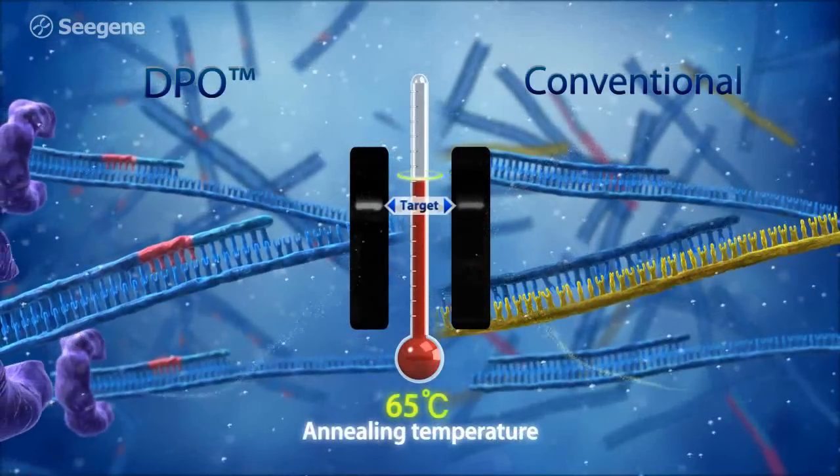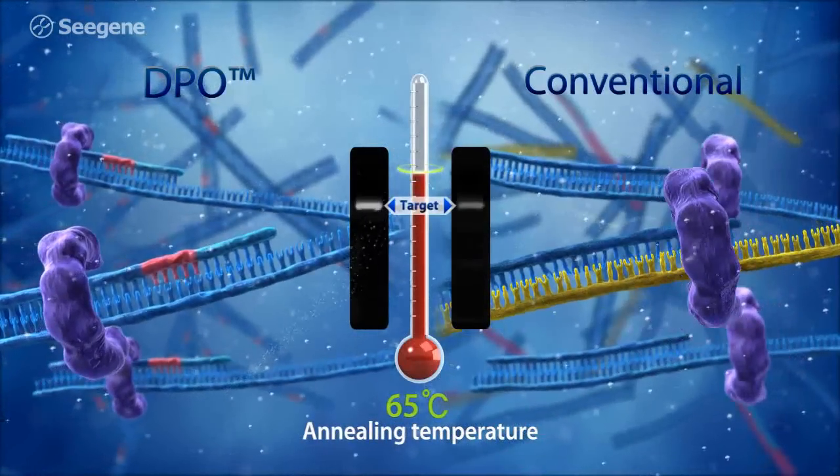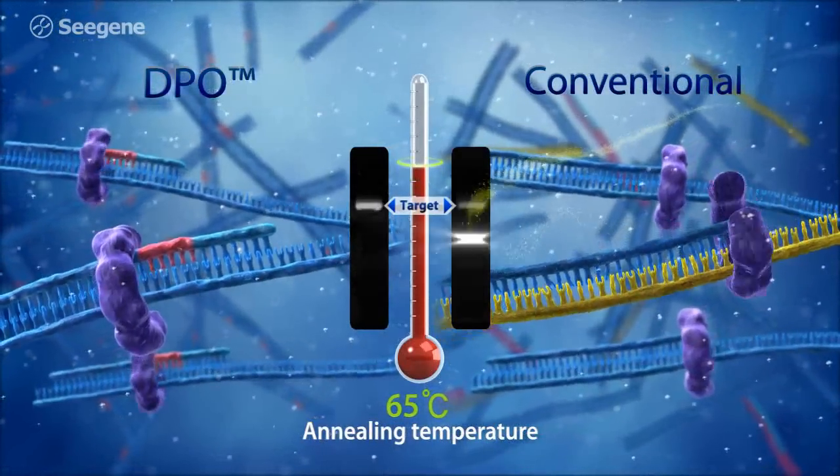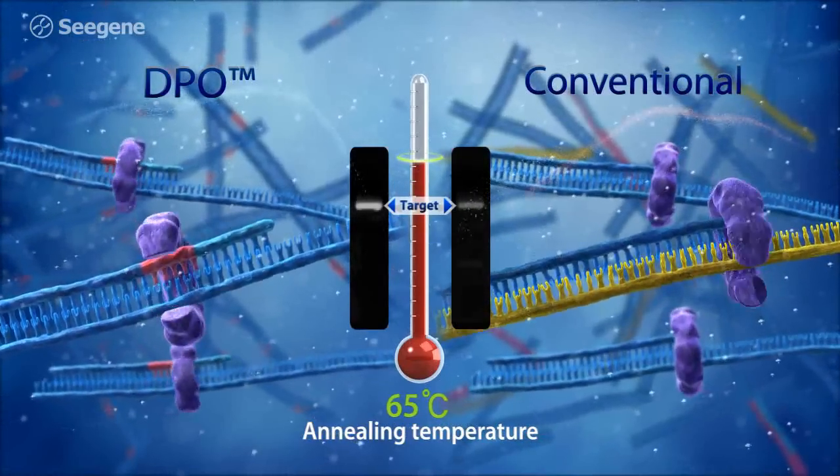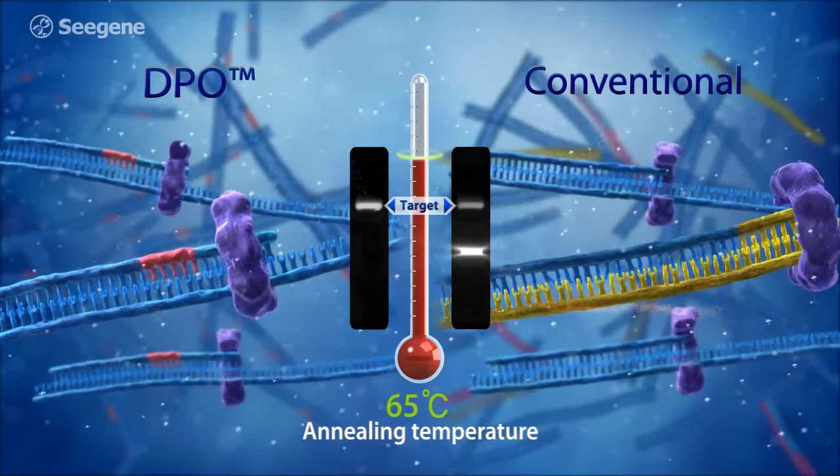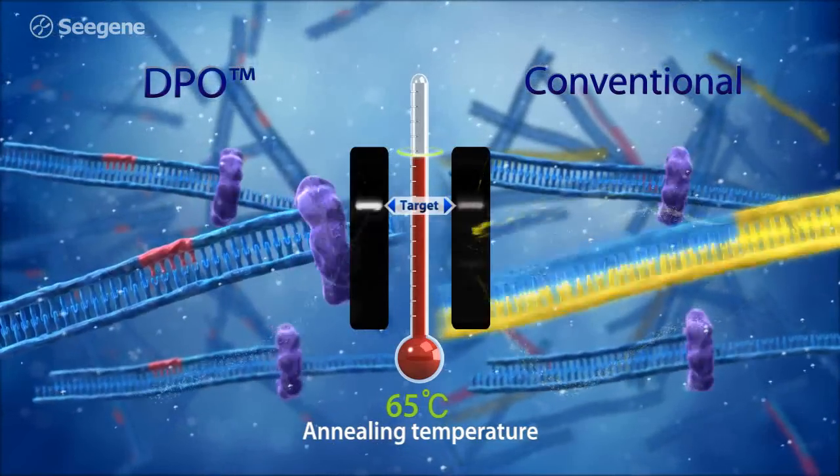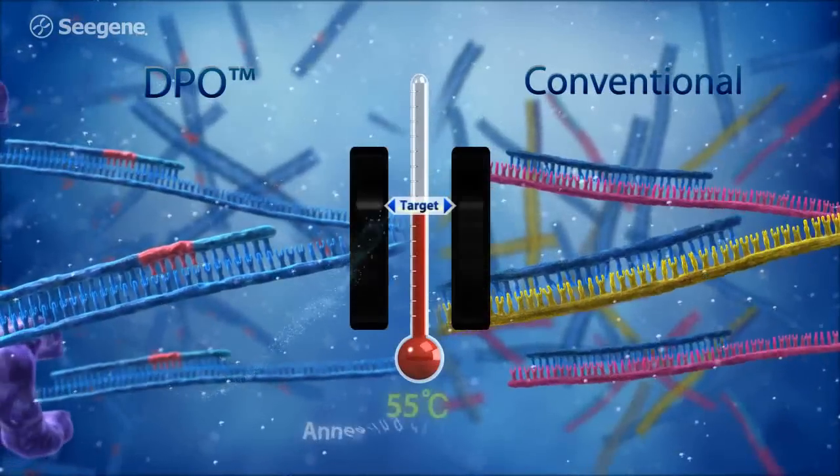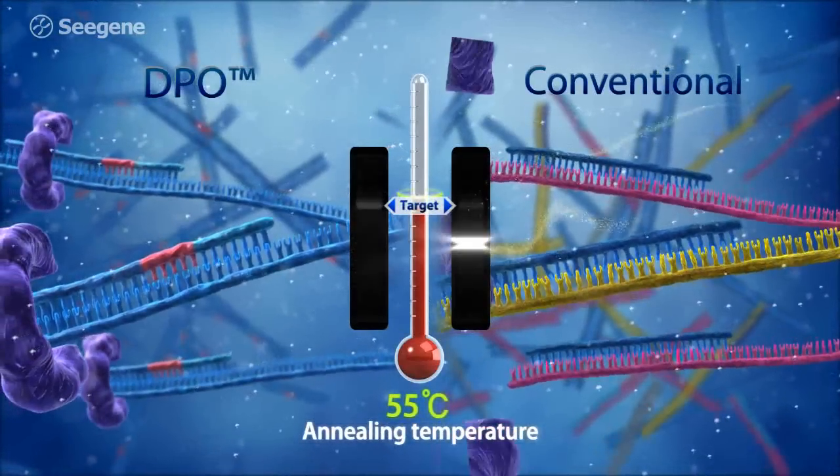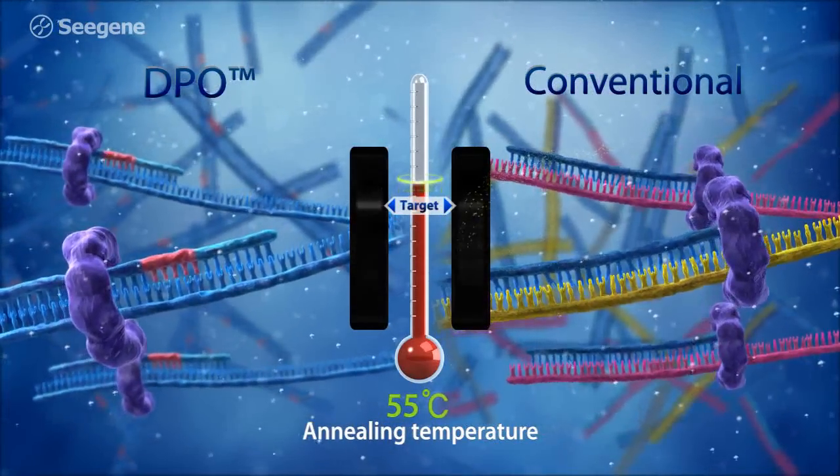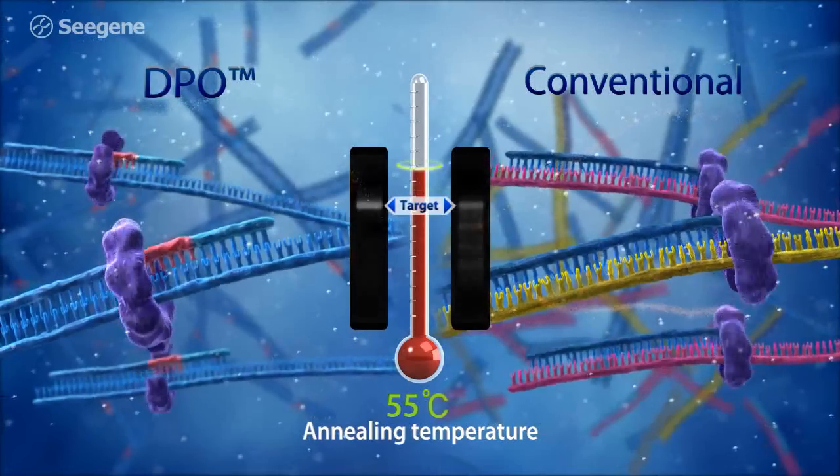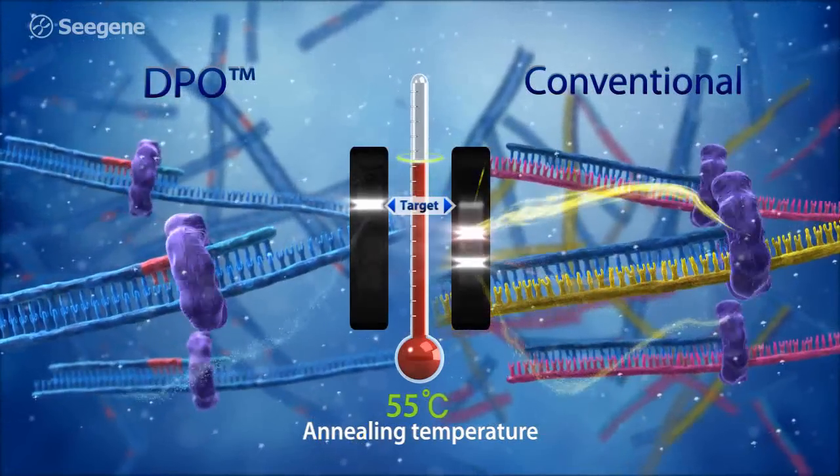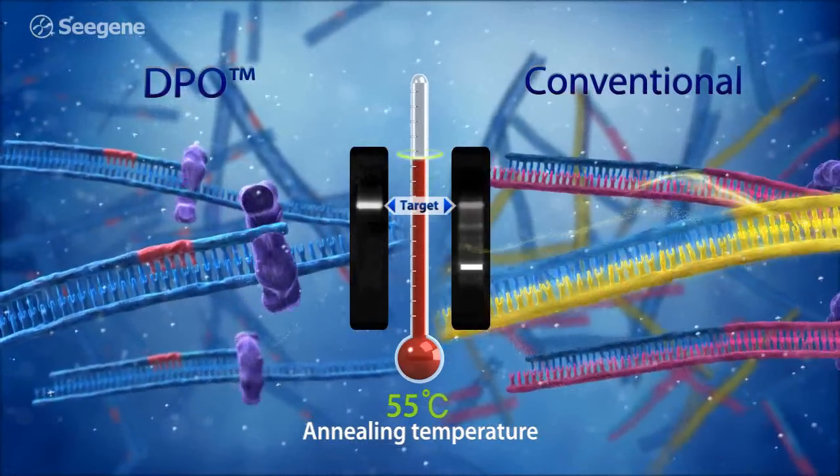The general barrier of multiplex PCR is the narrow window for appropriate annealing temperature. However, structural features of DPO primers allow them to maintain PCR specificity over a wide range of annealing temperatures. DPO primers can amplify target DNA with tolerance in annealing temperature differences of approximately 10 degrees Celsius.